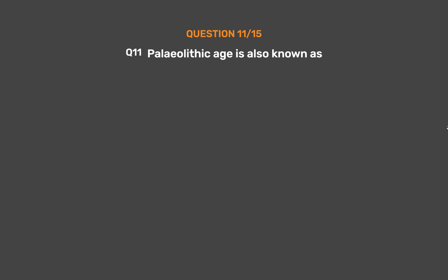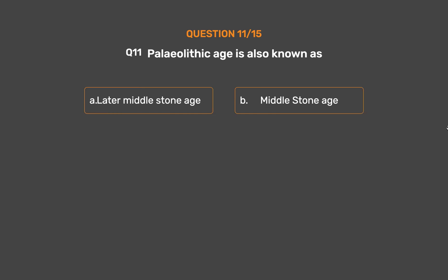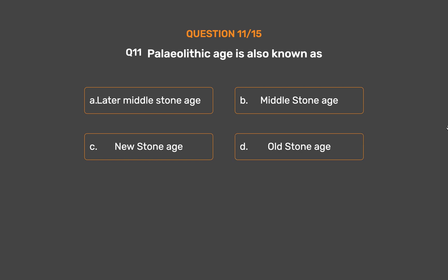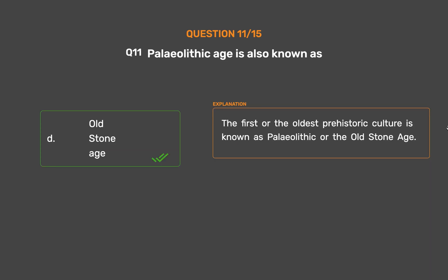Question number eleven. Paleolithic age is also known as: Option A - Later Middle Stone Age, Option B - Middle Stone Age, Option C - New Stone Age, Option D - Old Stone Age. The correct answer is Option D: Old Stone Age. The first or oldest prehistoric culture is known as Paleolithic, or the Old Stone Age.